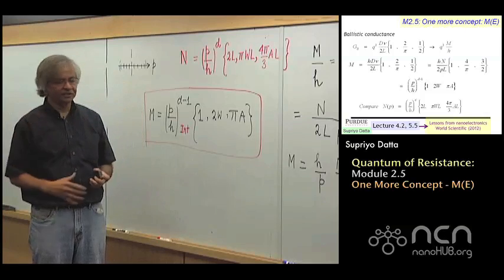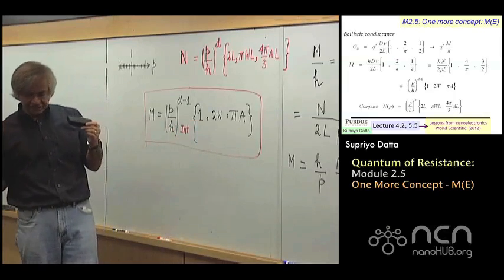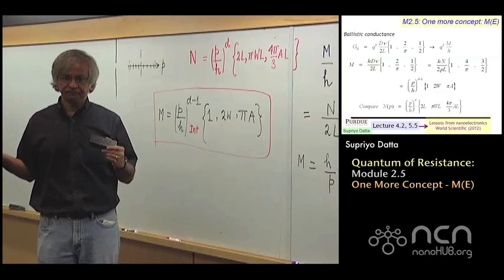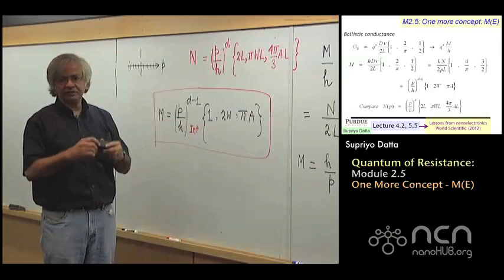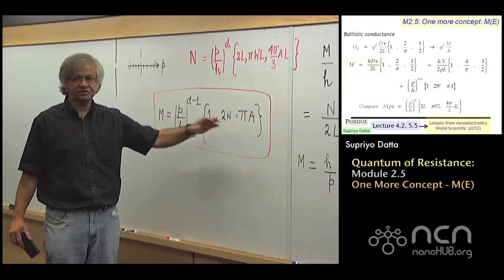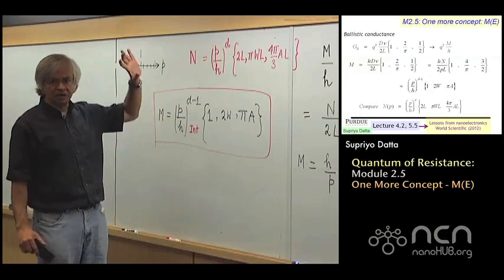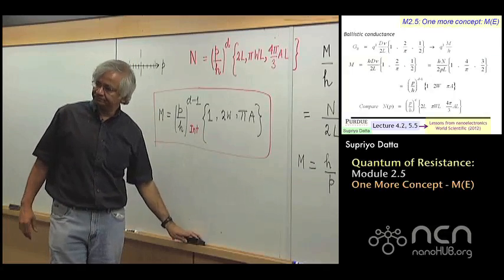And so, if your conductor is one dimensional, the answer is just plain one. And so, the ballistic conductance then would just be Q squared over H. If it's two dimensional, then what you have to do is look at the width, see how many wavelengths fit. If it's three dimensional, look at the cross section, see how many wavelengths fit. And that would be the way to interpret this new concept that we introduced in this module, this M, or the number of modes. But there it is, and let's twist. Thank you.